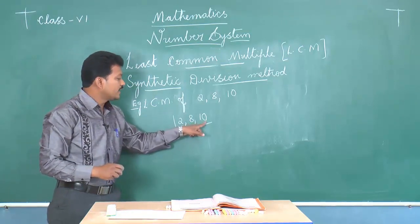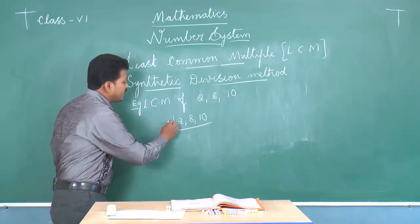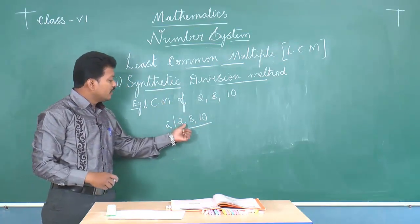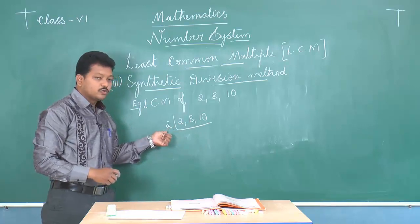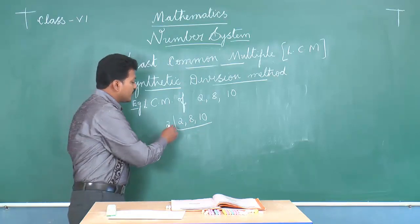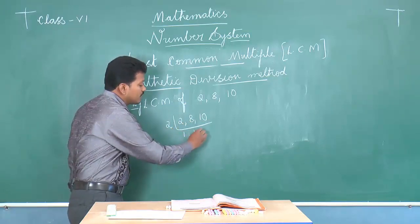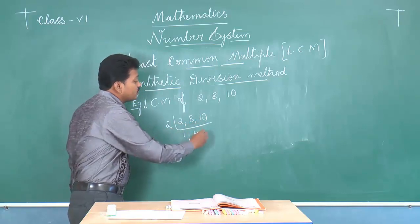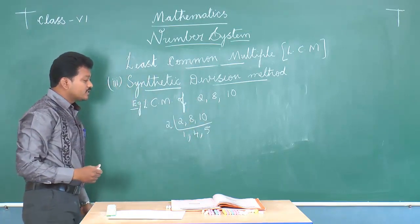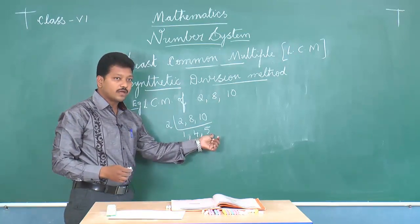Which number is a common factor of 2, 8, and 10? All the numbers are divisible by 2, so let us take 2 as our first common factor. All three numbers are divisible by 2, so we write the quotients in the next row. 2 divided by 2 is 1, 8 divided by 2 is 4, and 10 divided by 2 is 5. So we get 1, 4, and 5 in the next row.